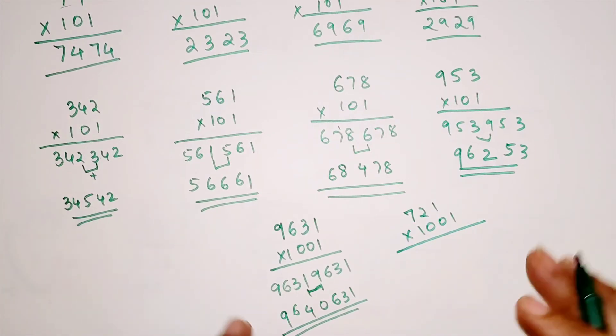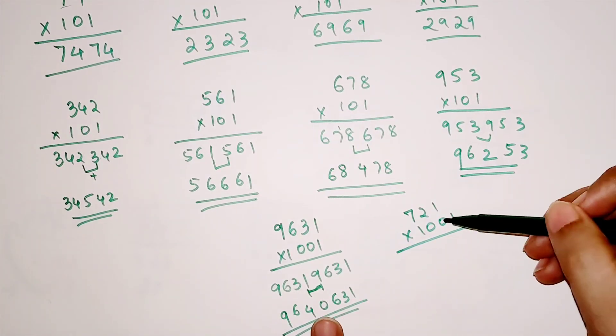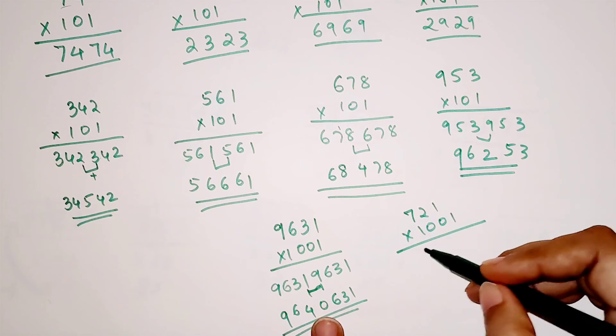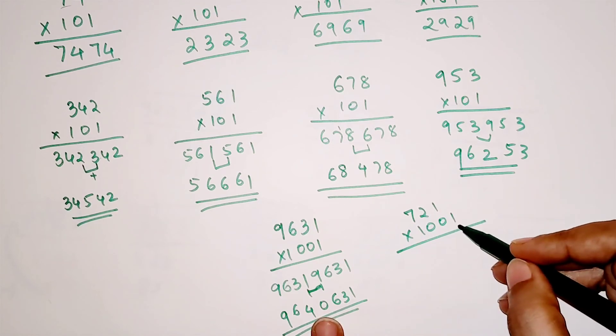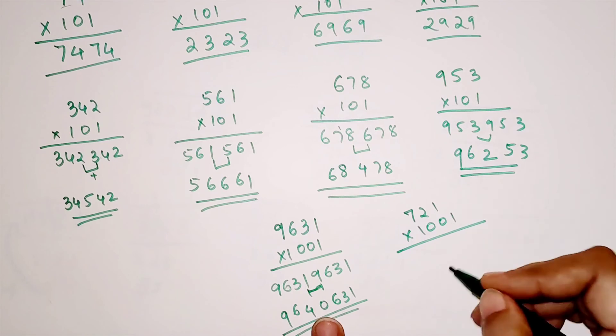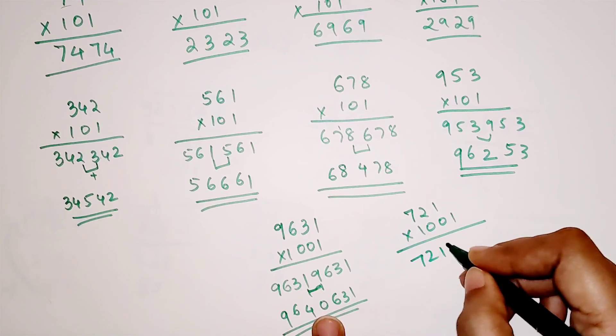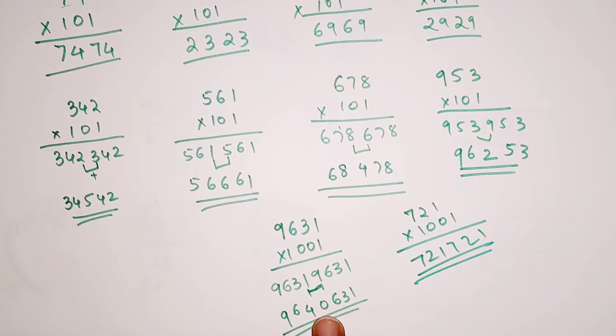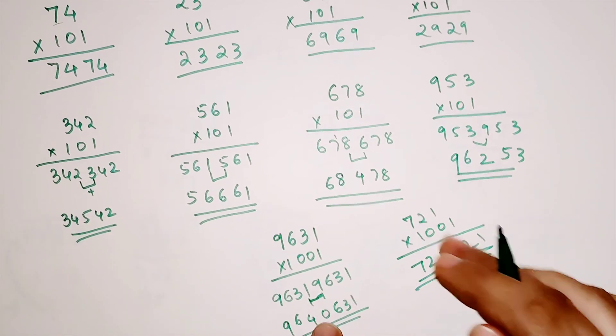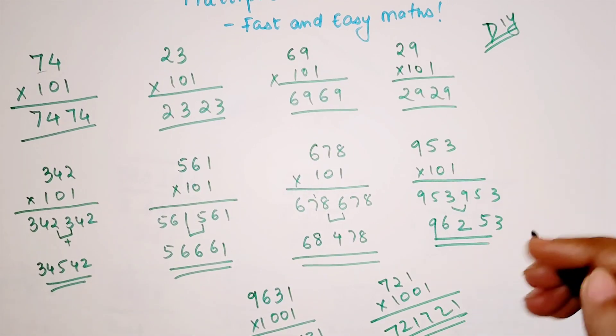Then again the same rule applies. If the number is less than 1 less than the number of digits in the multiplier, then you don't have to do anything. You just have to write it as it is. Because this rule will always stick around.